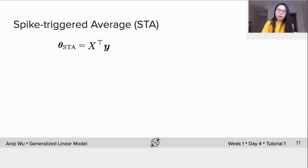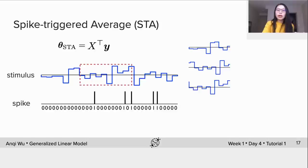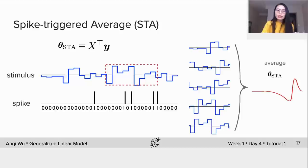Again we have the input stimulus and output spike. The model picks a window of stimulus right before the first spike and moves on to the next spike and all the way to the last spike. We then align these windows and take the average. The average stimulus within the window would give us θ_STA.